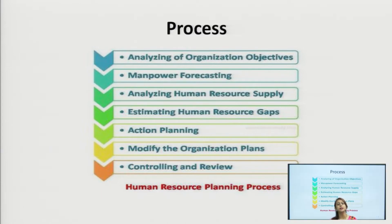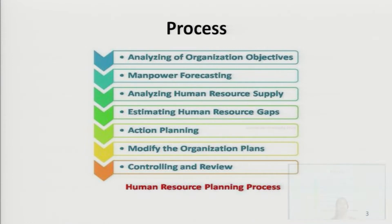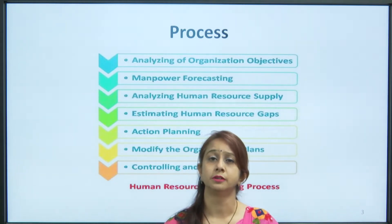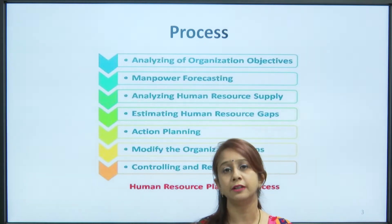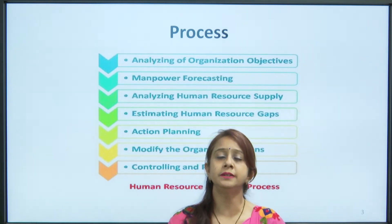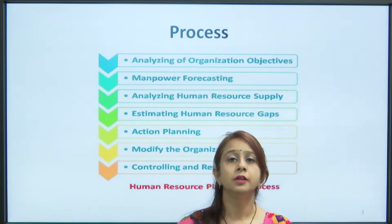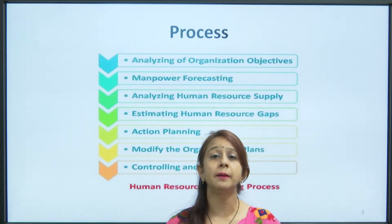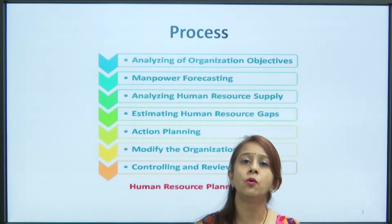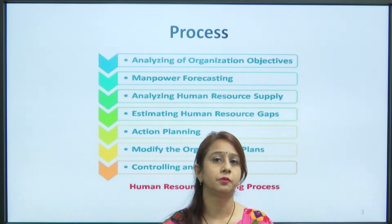The third step is analyzing human resource supply. Once we have decided we need, say, 10, 15, or 100 people for overseas operations, we will find the resources from where we will hire these people. We have two kinds of resources: internal and external. Internal resources are people already in the organization who can be transferred, promoted, or given career growth, and who can move overseas to perform operations for the company.